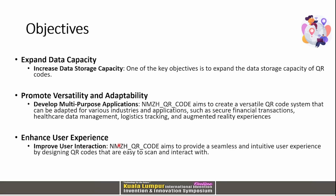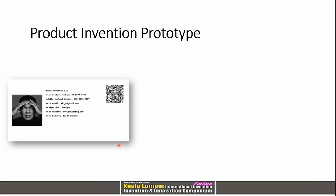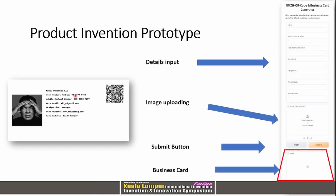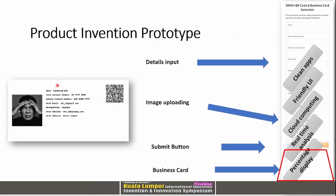The enhanced experience means users no longer need to manually type; they simply scan the QR code. This is what our e-business card looks like — it has a profile section, the QR code, and written info. The input form allows information details, image uploading, and a submit button, which produces the final card.